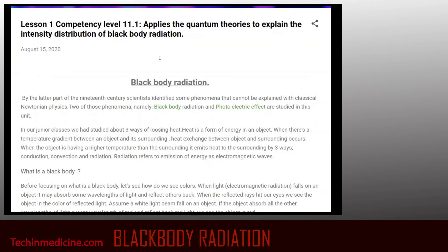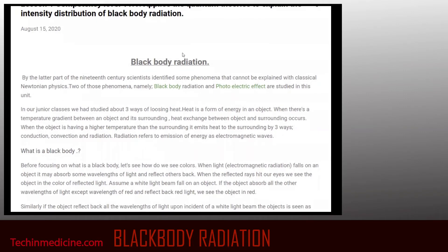When we touch a hot surface, we feel the warmth — that is because of conduction of heat, the second method of transferring heat. As the third method, we know there are convection currents in water. When we heat water, heated water goes up and cooled water comes down, making convection currents in liquid. The same phenomenon happens in our atmosphere too — when air is heated it goes up, and when it cools it comes down.